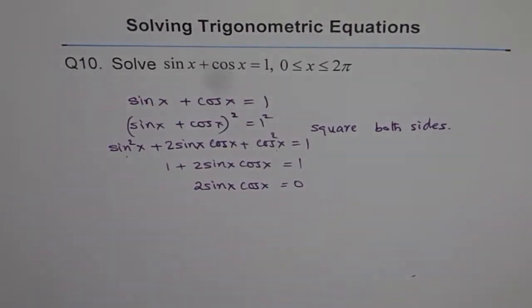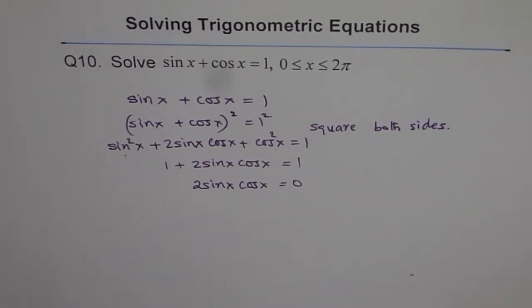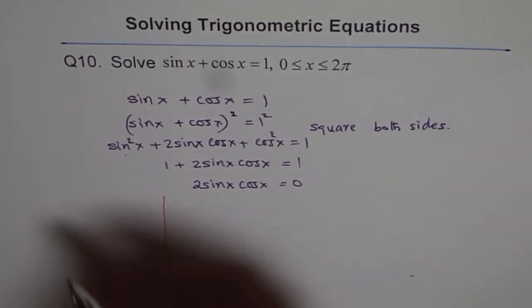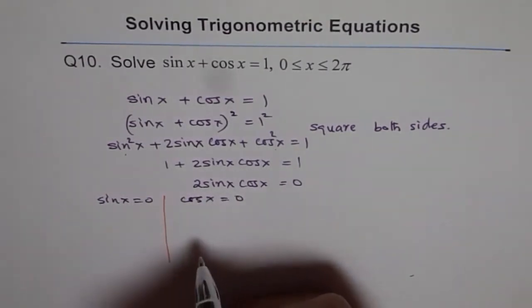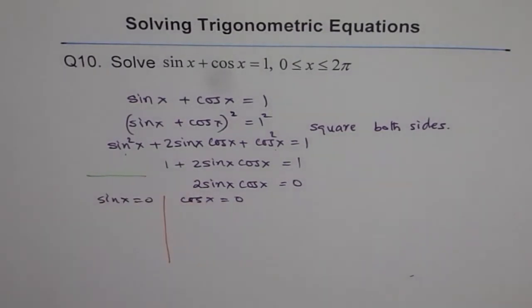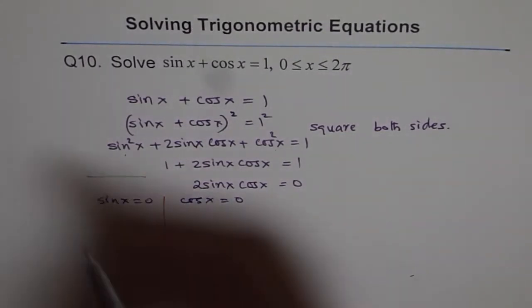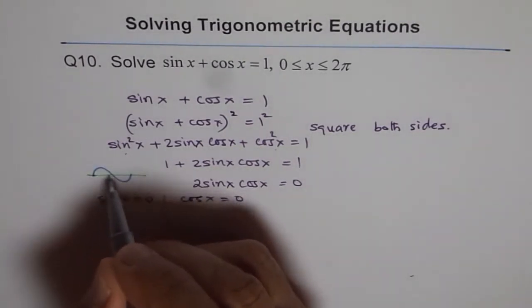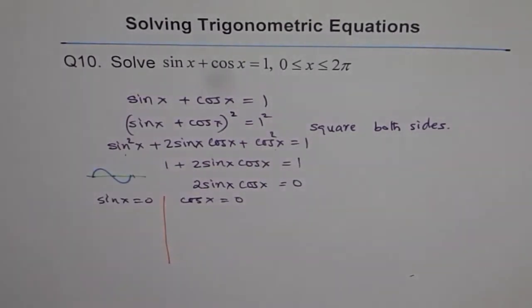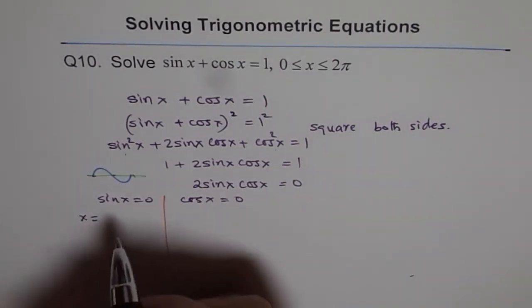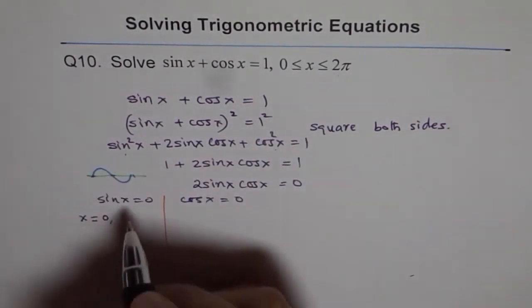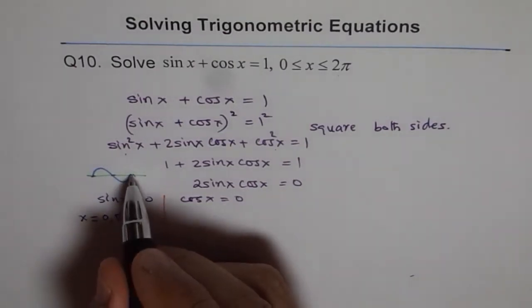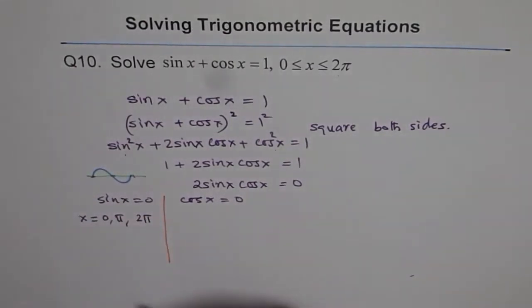If 2sinx cosx is 0, then the possibilities are either sin x is 0 or cos x is 0. Let's think about it like this. We have sin x equals 0 or we have cos x equals 0. Now, when is sin x zero? Let's draw sin x here. Sin x is 0 for 3 points in the interval 0 to 2π. So sin x is actually 0, that means we get x equals 0. And we have to give answers in radians. This is π, and then this is 2π. So these are the three solutions when sin x is 0.